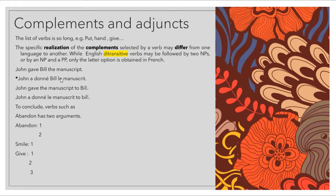For example, 'John gave Bill the manuscript' or 'John gave the manuscript to Bill' — both forms are grammatically correct in English. But in French, we only have one form: 'John donna le manuscrit à Bill.' The double-NP form is not available in French, so that option is ungrammatical in French, unlike in English.